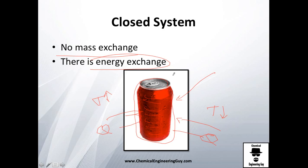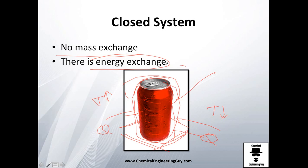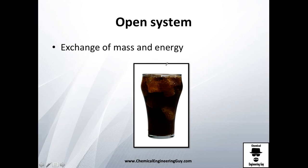The surroundings will be everything that is not our can — for example, the air, the ambient, this desk, the table, or if it's in the fridge, the fridge. And the universe will of course be all of that: our little can plus all the surroundings.